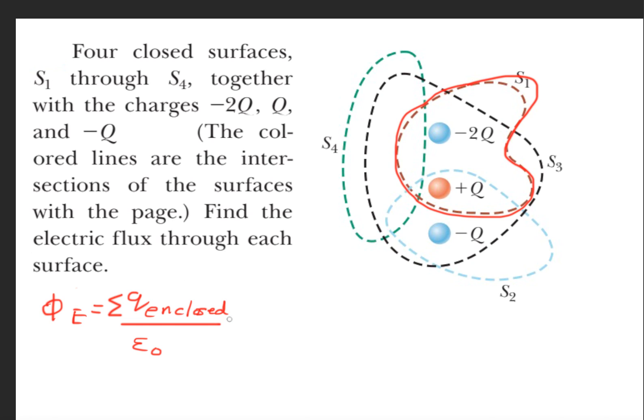So let's go ahead and do that. For S1 we have minus 2Q plus positive Q divided by epsilon naught, and if we simplify this we'll get minus Q over epsilon naught.